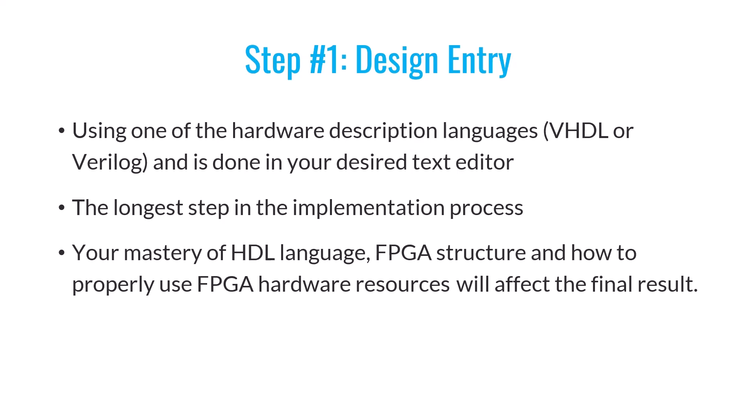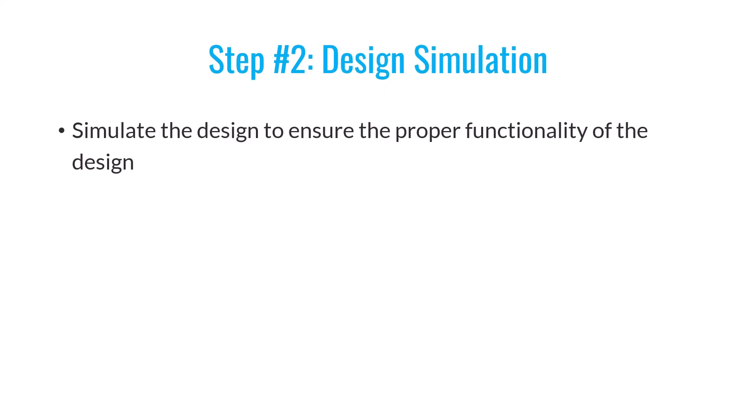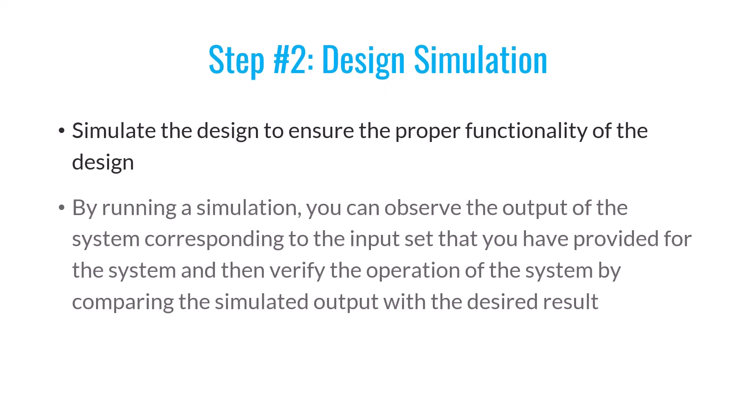The second step is the simulation of the design. Once you've described your design using an HDL, you need to ensure it functions correctly, and you can do this through simulation. In a simulation, you typically apply specific inputs to your circuit and expect certain outputs. By comparing the actual outputs with your expected outputs, you can determine whether you've implemented the circuit correctly or if there might be a logical error in the design.